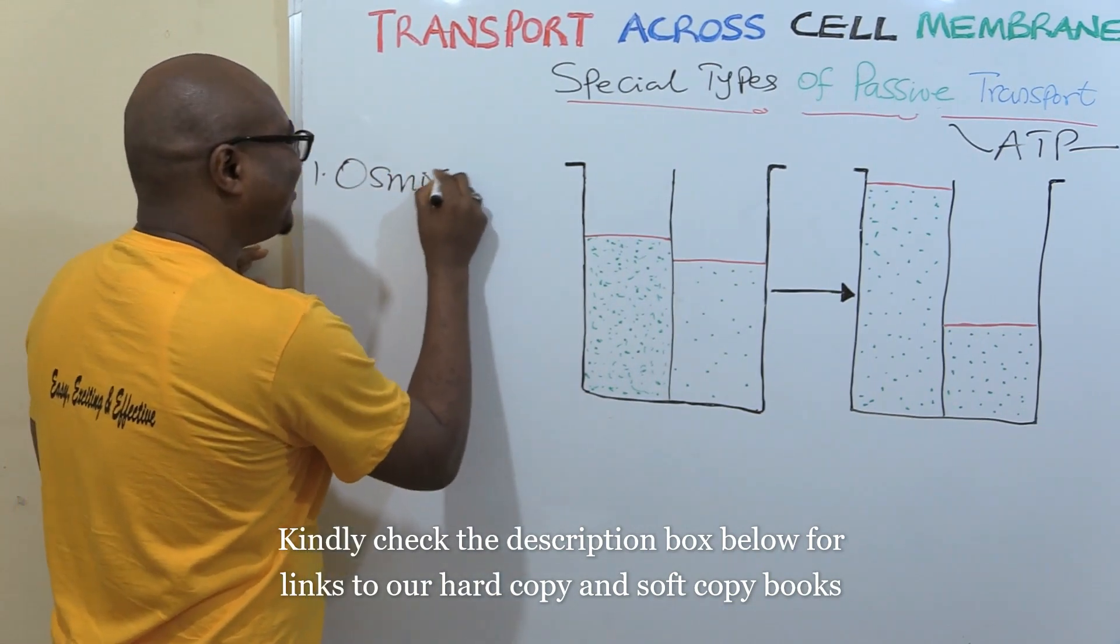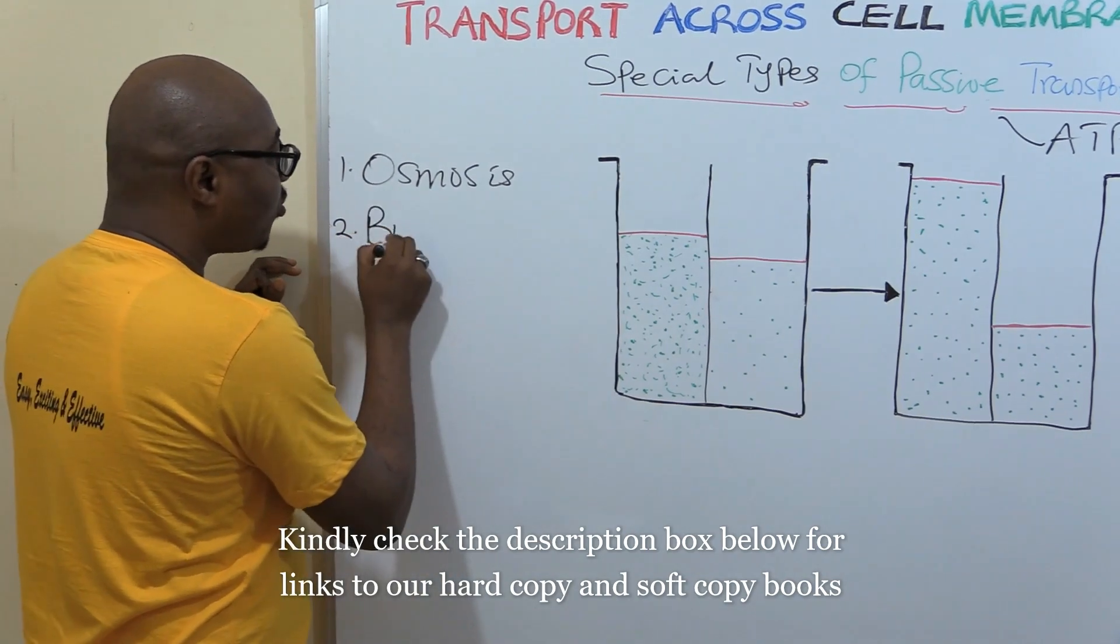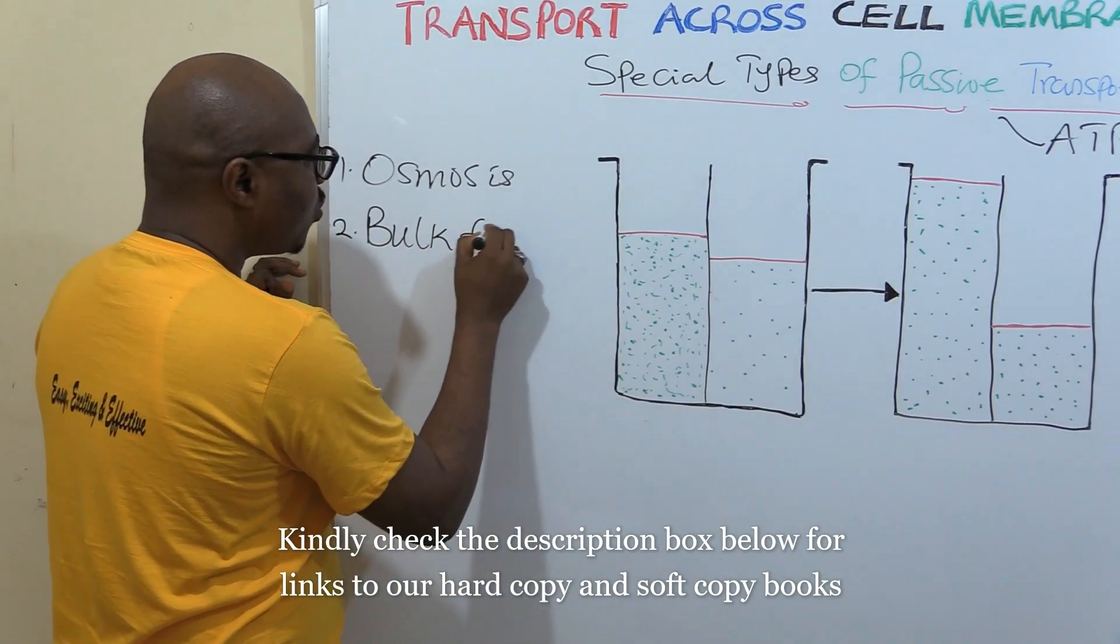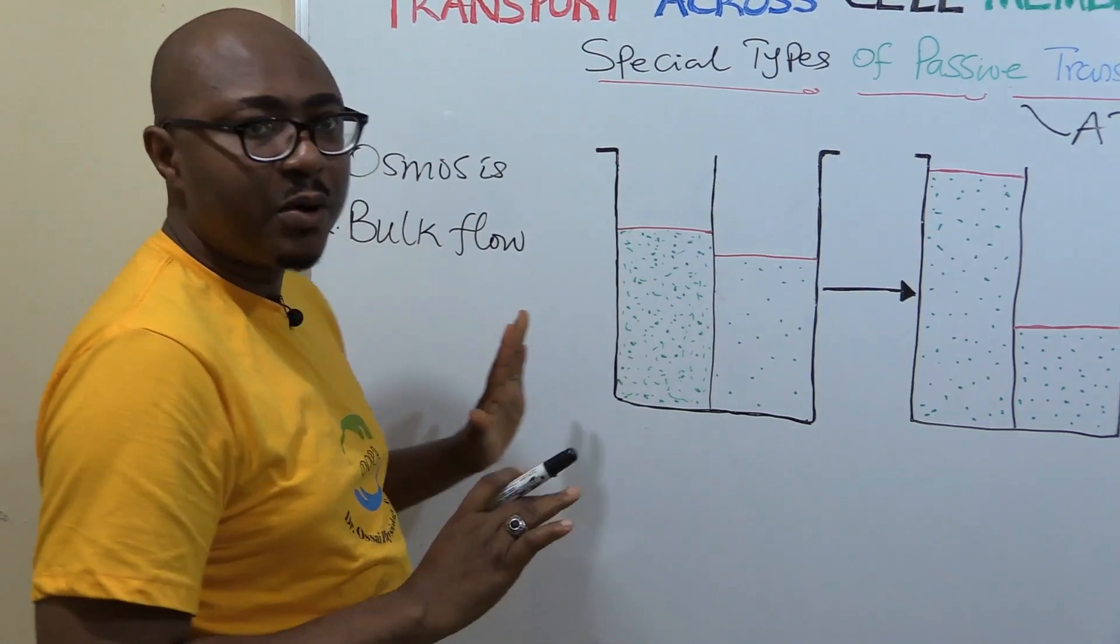What are we going to be talking about in these special types? Two types. Osmosis. I'm sure you're familiar with this. But the one that you may not be familiar with is this one: Bulk flow.